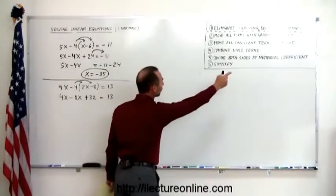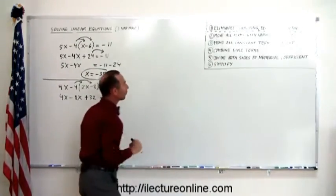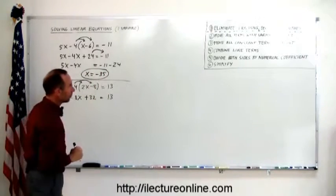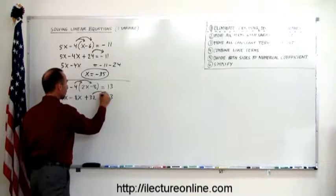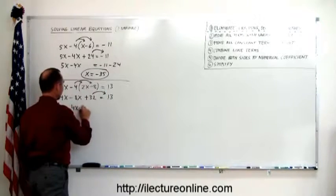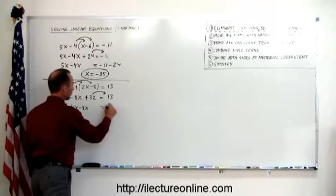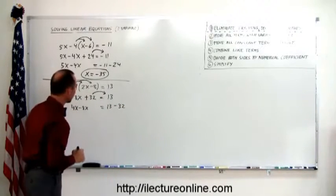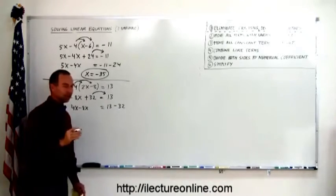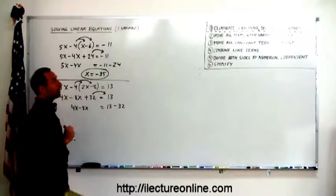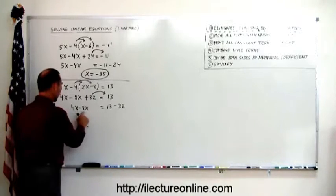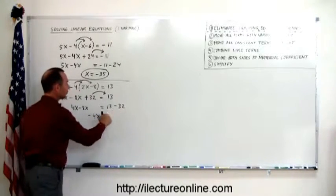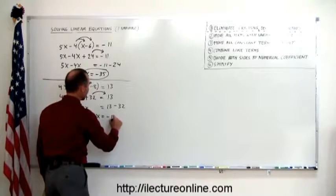Next step, move all the terms with the variable to the left. They're already here. Step number three, move all the constants to the right. So we have 4x minus 8x equals 13 minus 32. Always remember, when you cross the equal sign, the sign changes. Then we combine like terms. 4x minus 8x is minus 4x equals 13 minus 32 is minus 19.